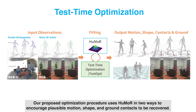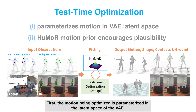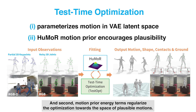Our proposed optimization procedure uses HUMOR in two ways to encourage plausible motion, shape, and ground contacts to be recovered. First, the motion being optimized is parameterized in the latent space of the VAE. And second, motion prior energy terms regularize the optimization towards the space of plausible motions.